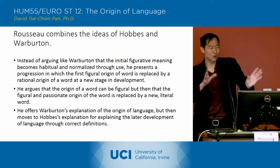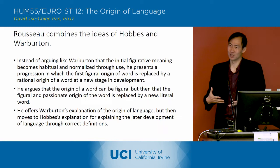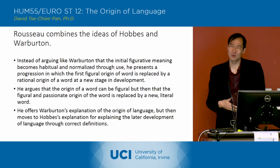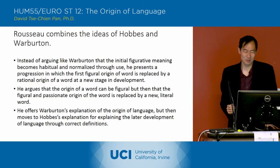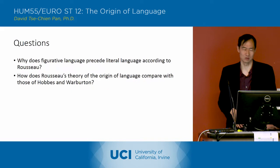Rousseau is indicating a progression in which you first have this figurative meaning that creates the first words, but then you switch and replace it with a literal word. In a sense, he's got Warburton's explanation for the first words, but then Homs's explanation of correct definitions for the later words. So he's combining both Warburton's and Homs's explanations, giving a two-step strategy for thinking through the origin of language.